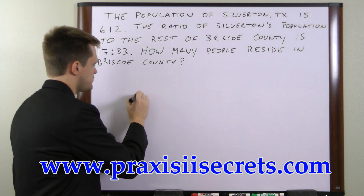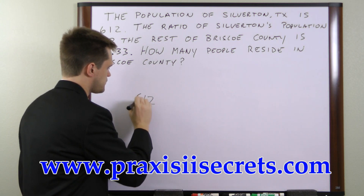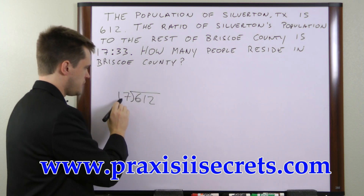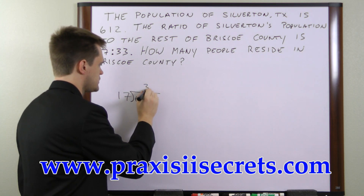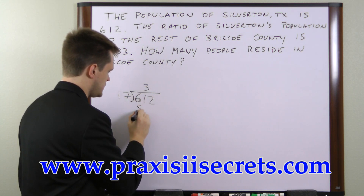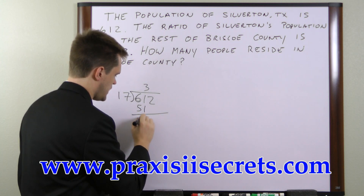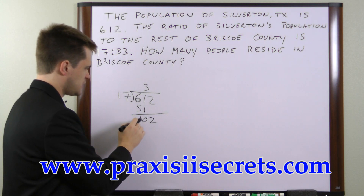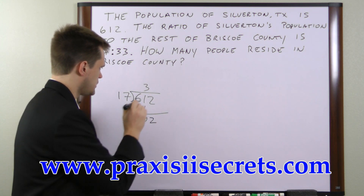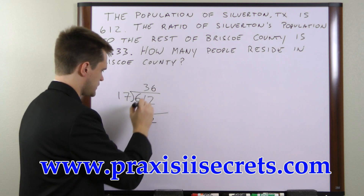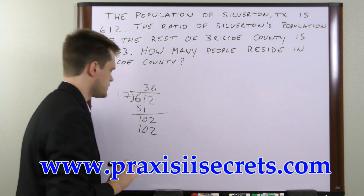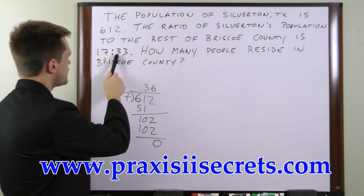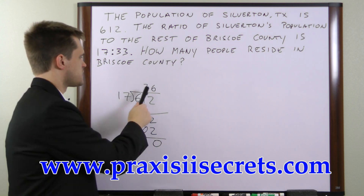So we have 612 people in the town and we're going to divide it by 17. Now 17 goes into 61 three times. 3 times 17 is 51, so that leaves us with 10. We'll add on this 2 here, and 17 goes into 102 six times. And 6 times 17 is conveniently 102. So each number in the ratio represents 36 people.